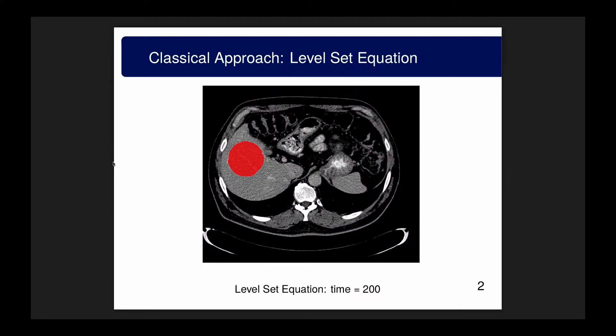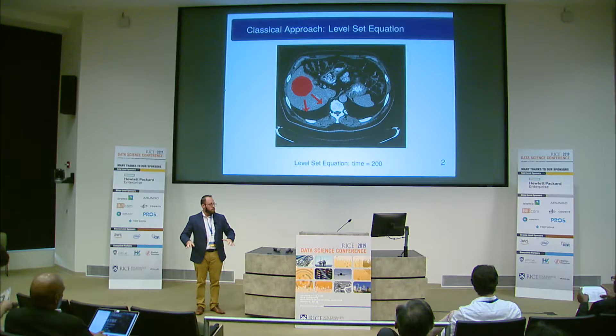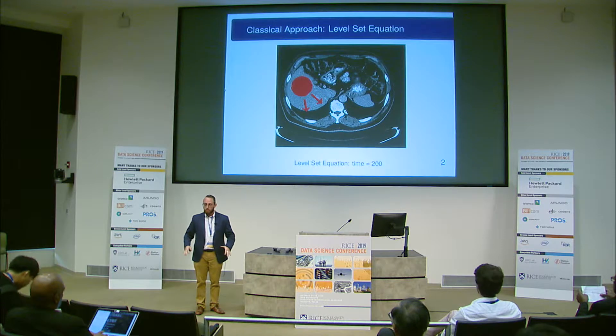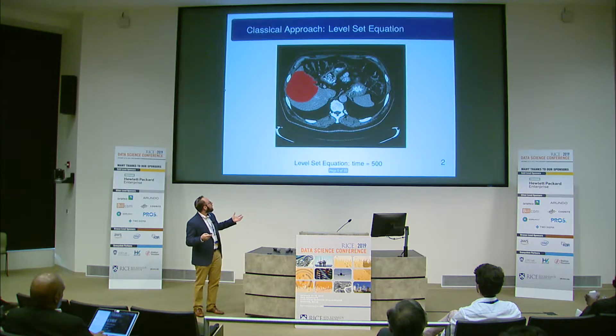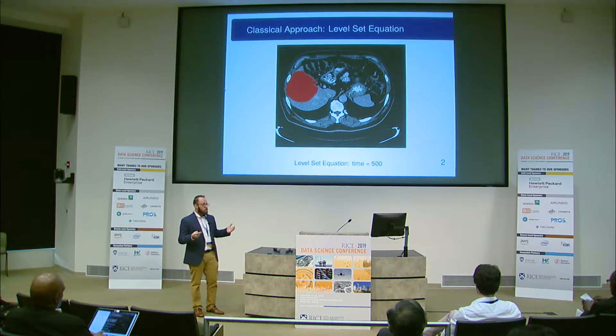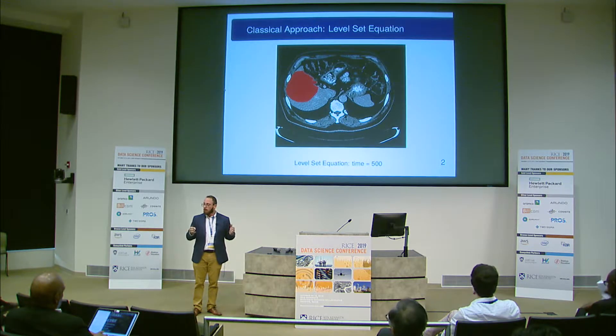How does this work? You begin with some initial region, and there are three terms in this differential equation. The first term is an outward expansion — a diffusion term. You have a region which evolves in time, and as we go in time we expand outwards based on some local information within the image. Going from time 200 to 500 (artificial time, not real seconds), we expand outwards in all directions.